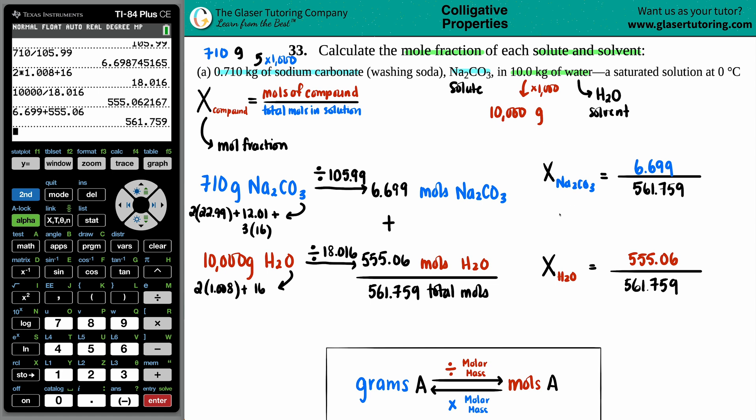Now we are ready to go. We have Na2CO3, we got H2O, and I'm ready to calculate. 6.699 divided by this total moles, I get 0.0119. And now I do the same for the H2O. 555.06 divided by that guy, and I get 0.988. No units for mole fractions because it's just a fraction. Mole on the top divided by mole on the bottom, the unit mole cancels out.